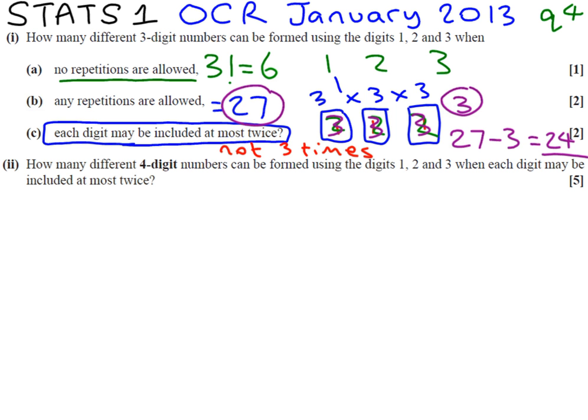Now I think part two is quite tricky. We have the three numbers again, one, two and three. And now we're thinking of making four digit numbers.